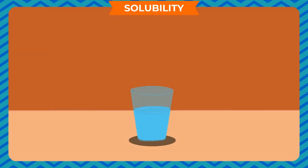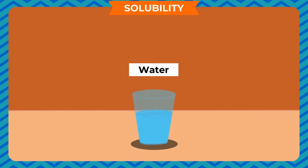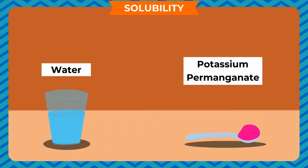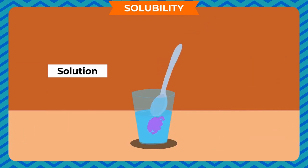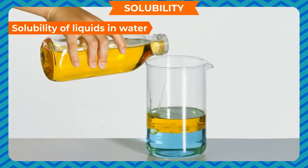When we dissolve a soluble substance in water, its molecules spread over the whole liquid and fill the spaces between the liquid molecules. For example, if you add a little potassium permanganate to water in a glass, you get a pink colored solution — the potassium permanganate dissolves and spreads through the whole water.